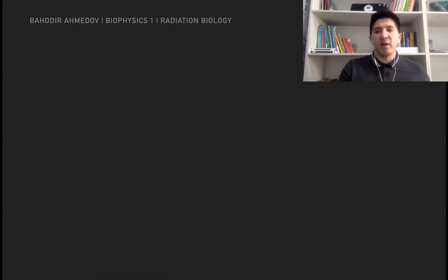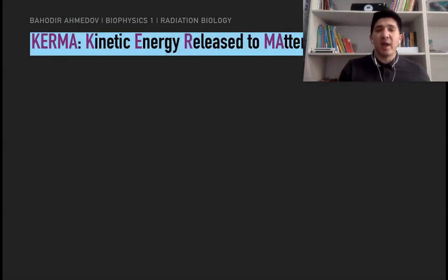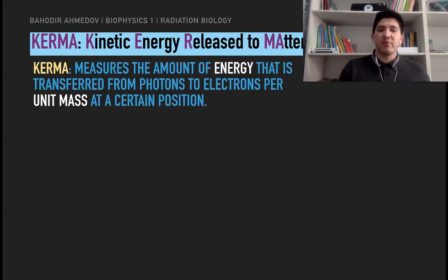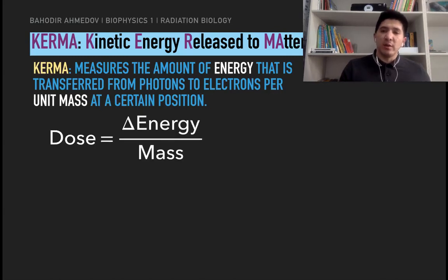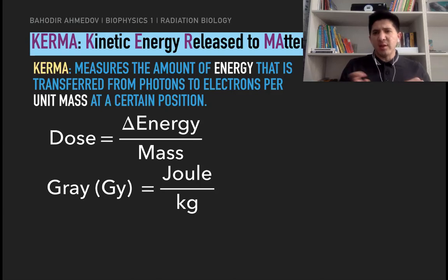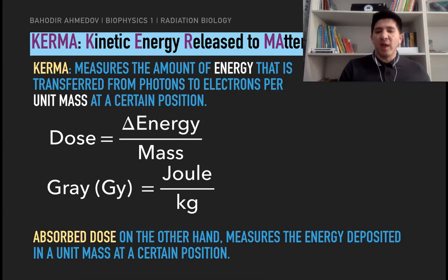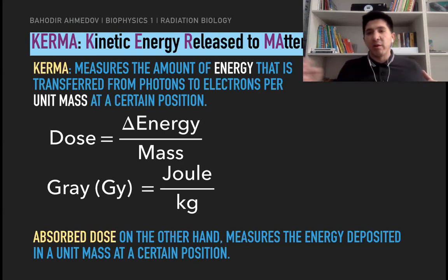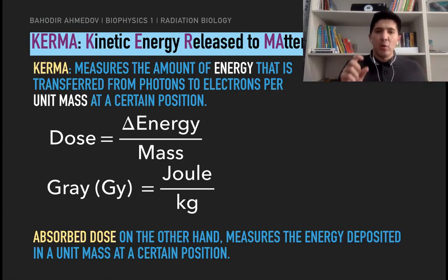Another way of measuring radiation physically is called kerma, which stands for kinetic energy released to the matter. Kerma is the measurement of the amount of energy transferred from photons to electrons per unit mass at a certain position, and it has the same units as absorbed dose: joules per kilogram, or gray. There is a slight difference: absorbed dose measures energy deposited in a unit mass, while kerma measures energy transferred from photons to electrons. For low-energy radiation, the values of kerma and absorbed dose are the same; they differ for highly energetic radiation.